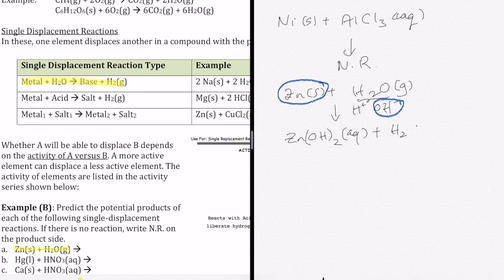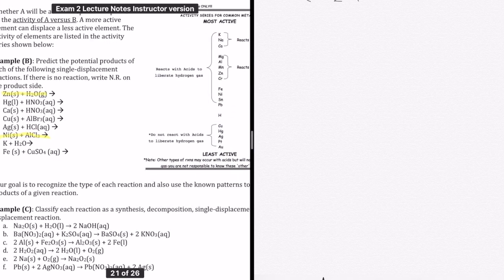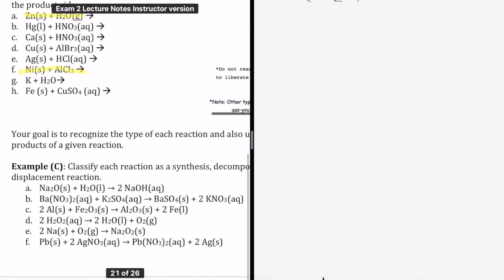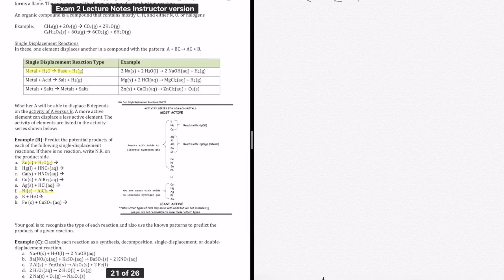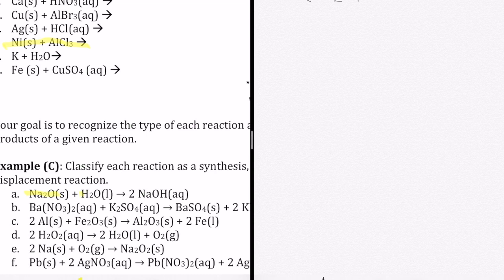So the last example I want to show you is just an example about determining what kind of reaction you have in front of you. And that's given by this problem here at the bottom. It just says classify each reaction as either synthesis, decomposition, single or double displacement. So I'm just going to do a couple of these examples. This is Na2O plus H2O forming NaOH. So you can see that you are having two different things combining to form one. So that must be a combination reaction or synthesis reaction.